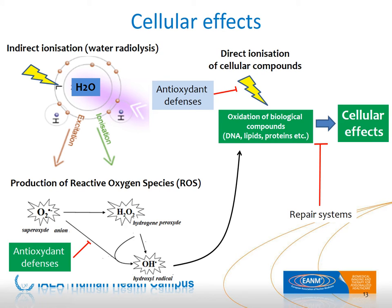Cellular effects observed in relation to irradiation can be caused either by a direct or indirect ionization pathway. In the direct pathway, irradiation may cause direct oxidation of biological compounds such as DNA, lipids, or proteins. In the indirect pathway, irradiation causes water radiolysis, leading to the production of reactive oxygen species and free radicals, which may end up with the same oxidation process of biological compounds. Depending on the repair system, different cellular effects can finally be observed.